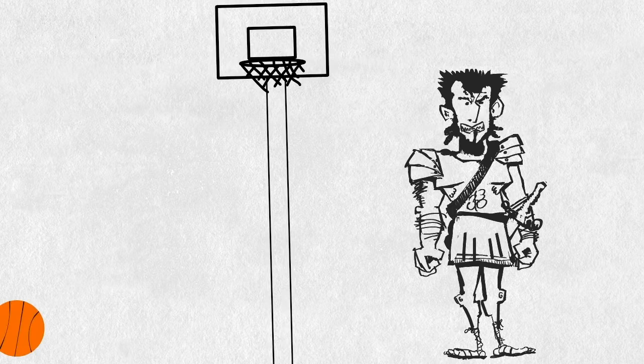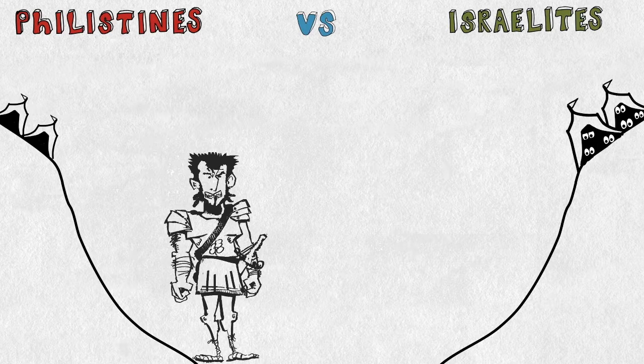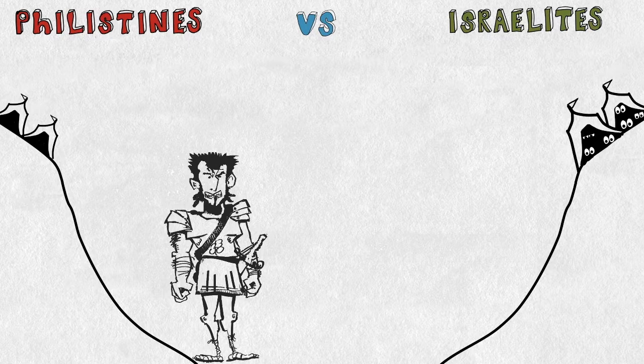Whoa. That dude is almost as tall as a basketball goal. I bet he could dunk the ball super easy. I'm pretty sure he could. Well, Goliath said to the Israelites that they should send out their best warrior to fight him. And whoever won the fight would win the war. How would they know who won?